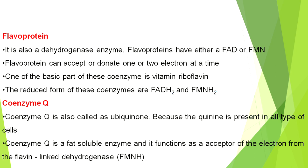Next is Coenzyme Q, also called ubiquinone because it is present in all types of cells. Coenzyme Q is a fat-soluble molecule and functions as an acceptor of electrons from the flavin-linked dehydrogenase — that means FMNH2 (flavin mononucleotide hydrate).